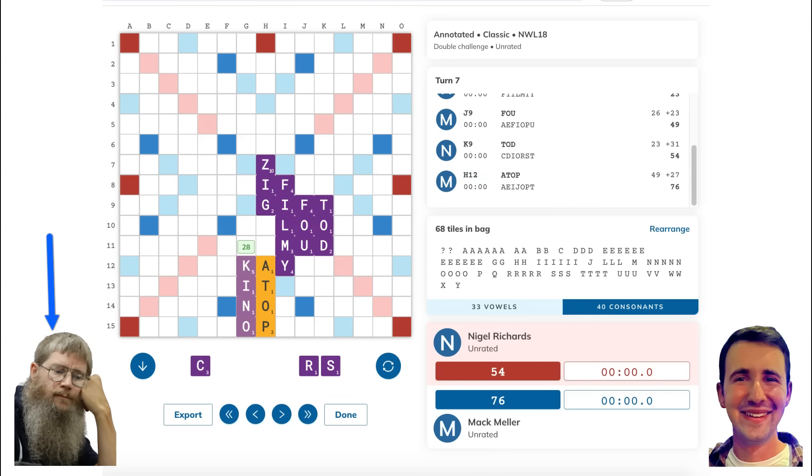Now, CRS is still a really good leave. The C and the R go very well together, but I would slightly prefer INS, just because 3 consonants and no vowels can land you in trouble if you don't draw enough vowels on your next pull. But maybe Nigel had other plans with this play. We'll find out later.